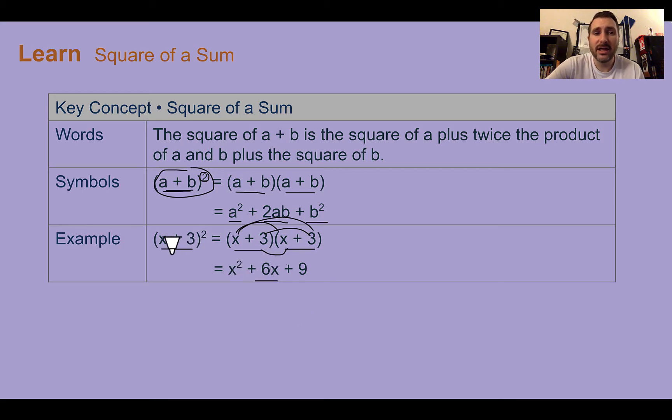But we can just skip right ahead if we know this pattern. If we take the first number squared, we get x². If we take the last thing squared, 3 times 3 is 9. Then if we multiply the two things together, 3 times x is 3x, and then double that, times 2, we get 6x, which is what is shown in the middle. So this can be a shortcut if you see the sum to the second power.